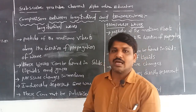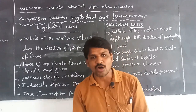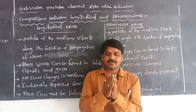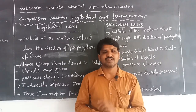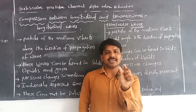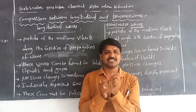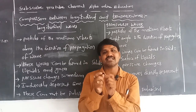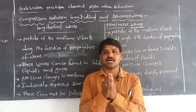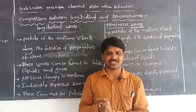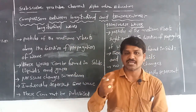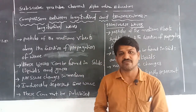In a longitudinal wave, compressions and rarefactions are formed alternatively — after compression, rarefaction is formed. For example, in a spring: when the spring is vibrated, at some places the distance between coils is less than normal — that is compression. After that, where the normal distance is more, that is called rarefaction. So alternatively, rarefactions and compressions are formed in longitudinal waves.